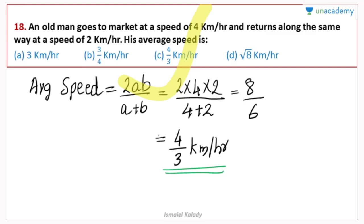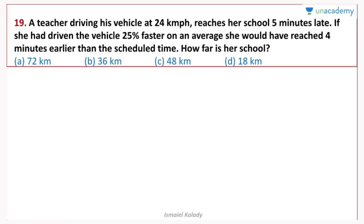Next question: A girl's speed is 5% faster than average, so she reaches 4 minutes earlier than the scheduled time. How far is her school? We will work with 24 kmph as the speed. Using the ratio method and equation approach, we can find the distance between the school and the starting point. Both the ratio method and equation method will be explained.